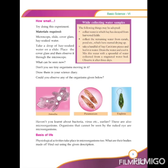After keeping the slide under the microscope, what did you see? Don't you see tiny organisms moving in it? If so, try to draw pictures of them. Could you observe any of the organisms given below? Names of some organisms are given: Amoeba, Paramecium, and Euglena. These are some microorganisms which we can see through the microscope. Organisms that cannot be seen by the naked eye are called microorganisms.